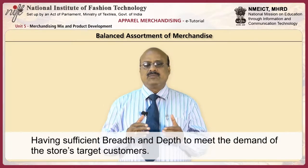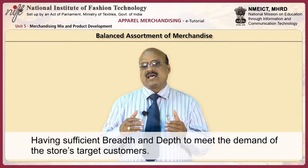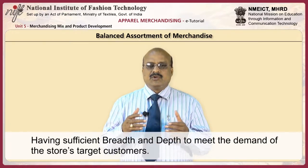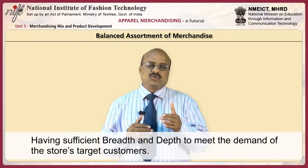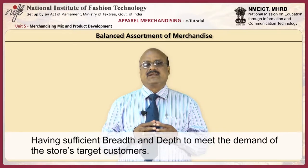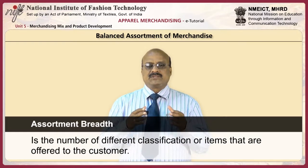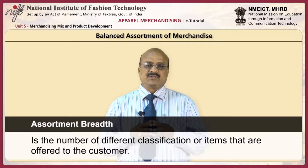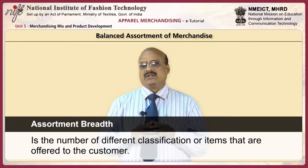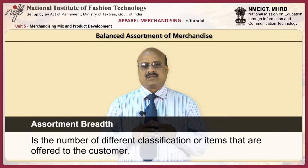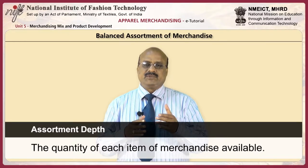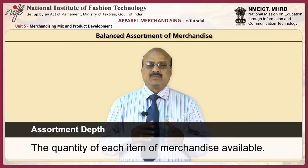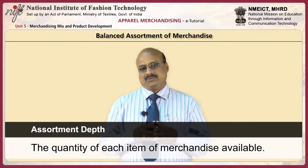Balanced assortment of merchandise is having sufficient breadth and depth to meet the demand of the store's target customers. Assortment breadth is the number of different classifications or items that are offered to the customer. Assortment depth is the quantity of each item of merchandise available.